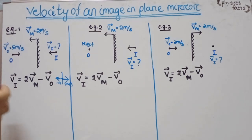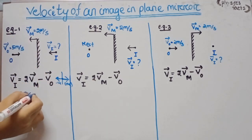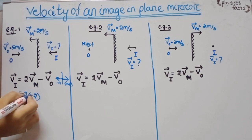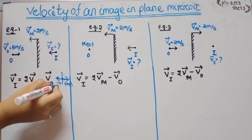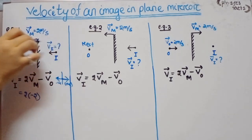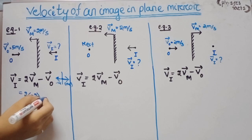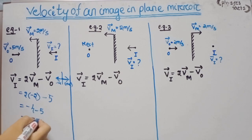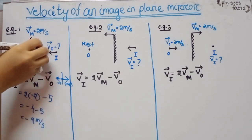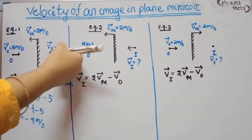The velocity of the image is -9 m/s, meaning 9 m/s in the opposite direction. The object moves in the positive direction and the image moves in the negative direction.